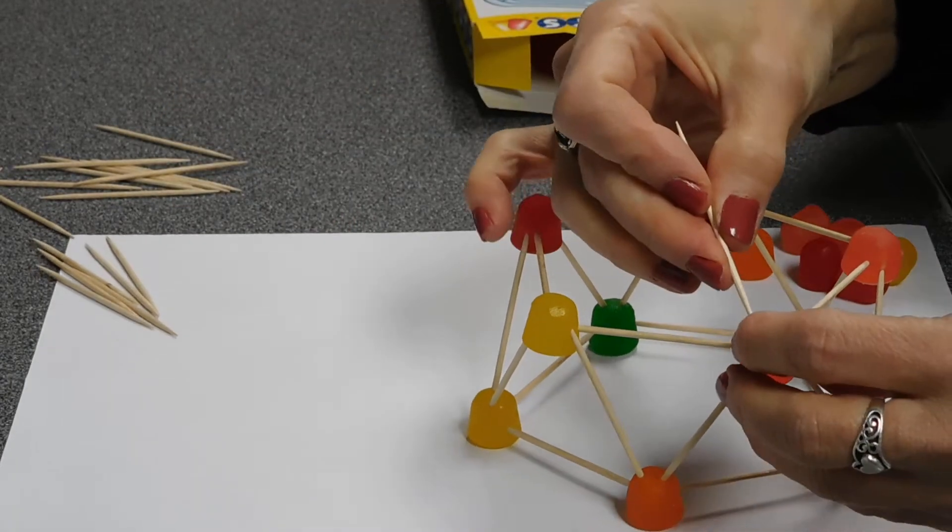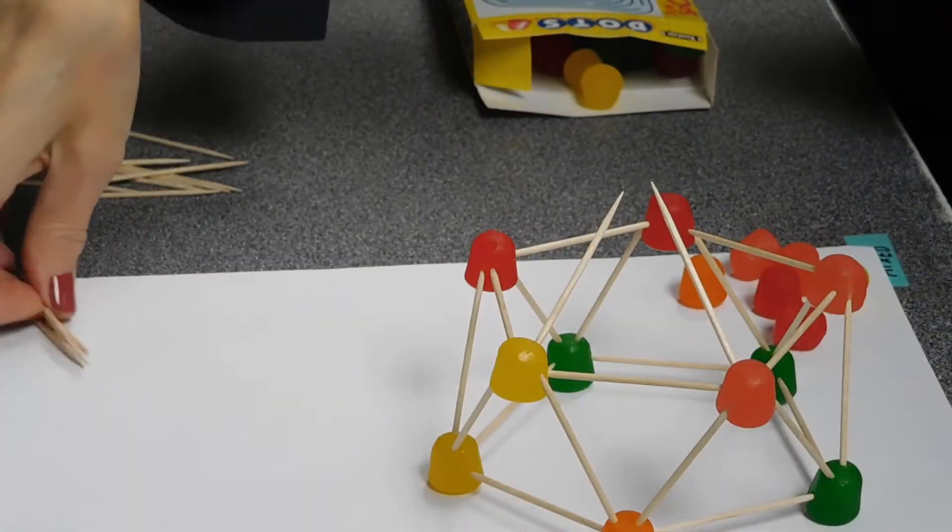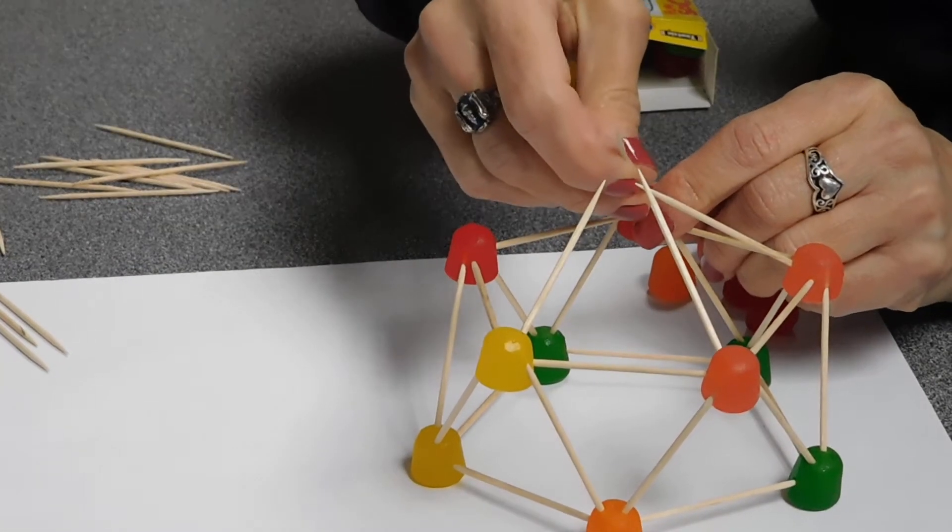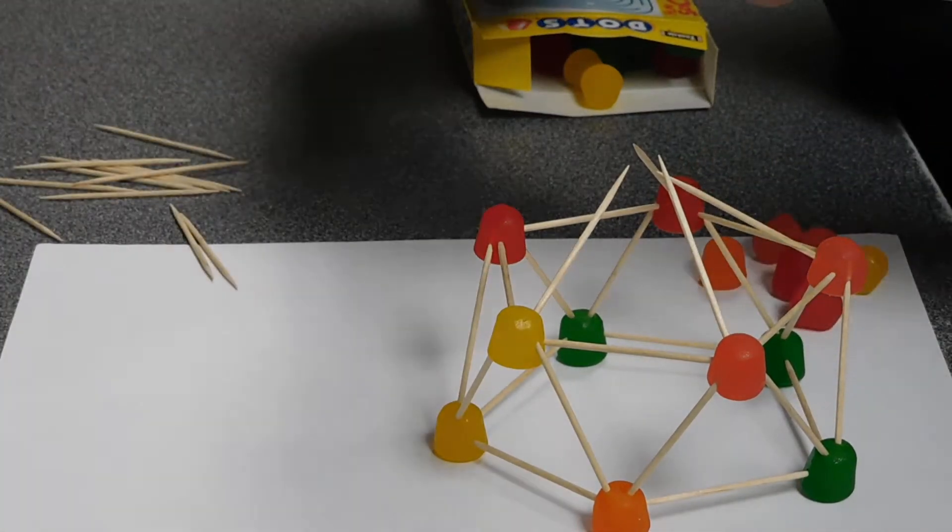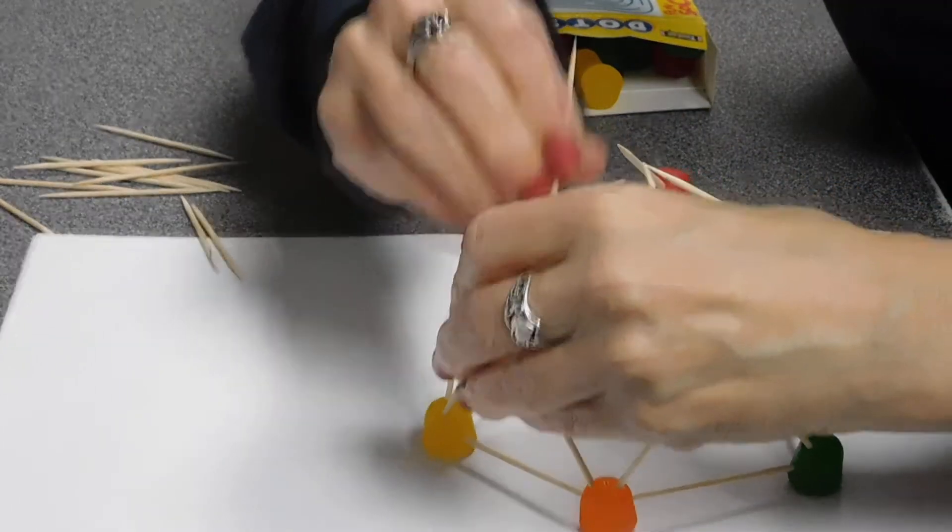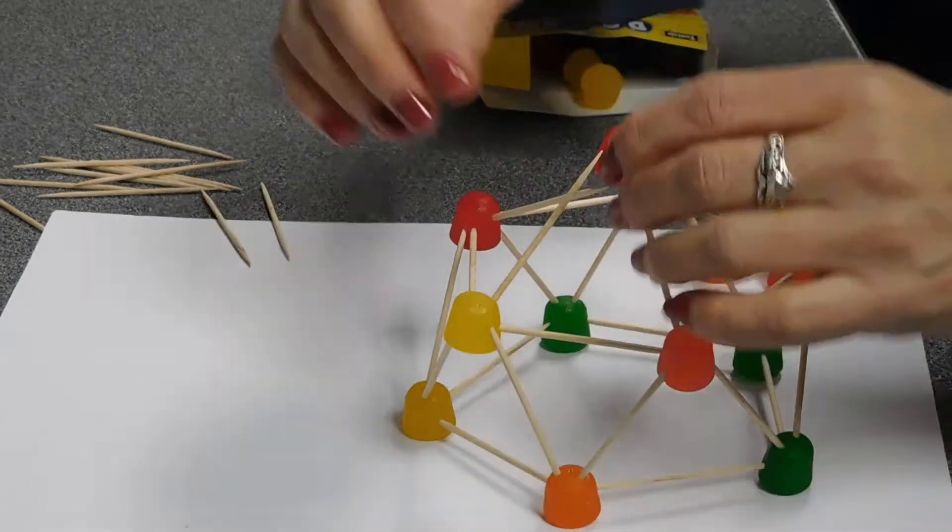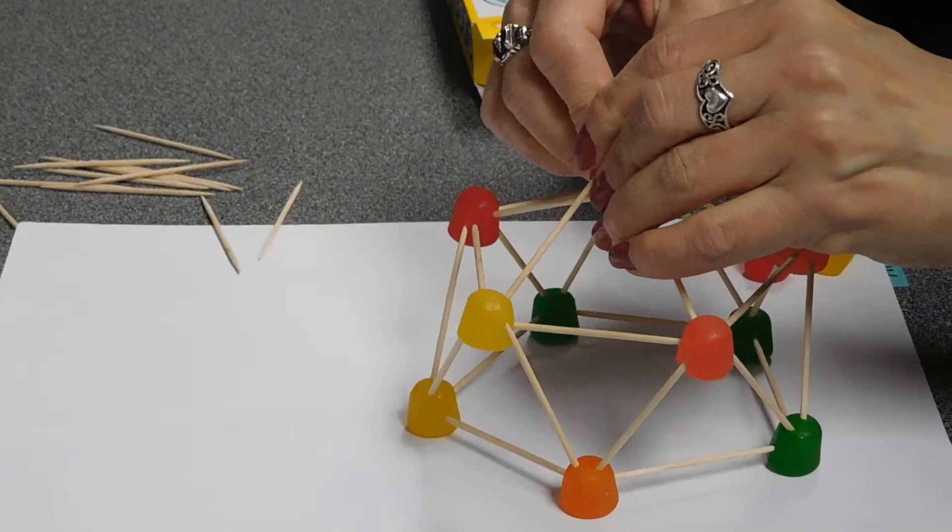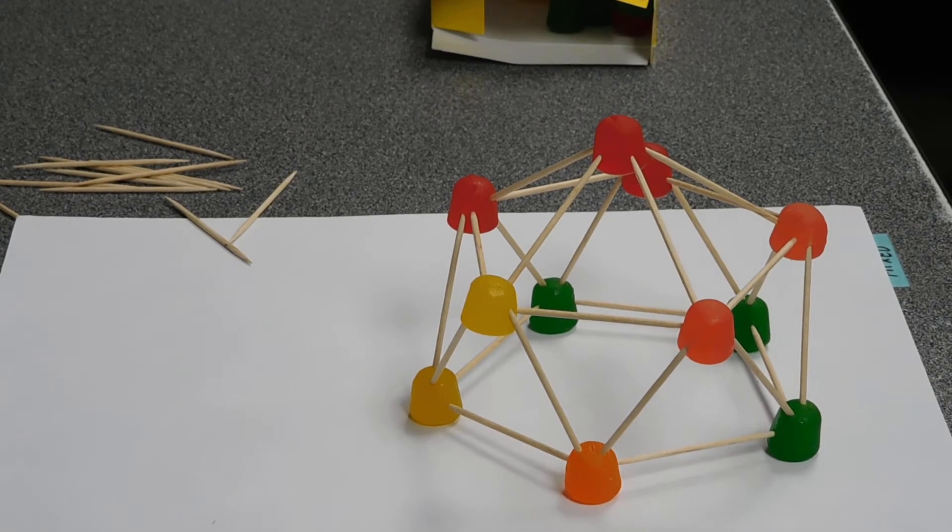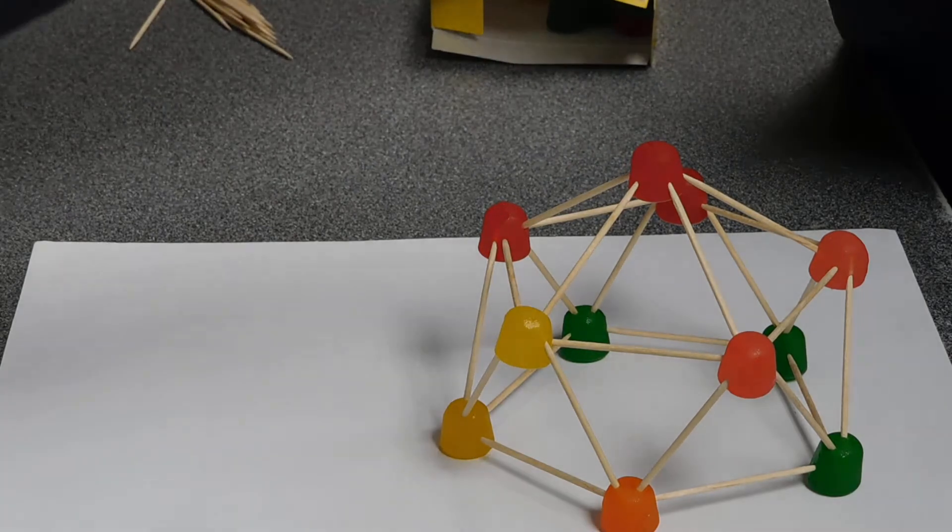And what we're going to do now is take five more toothpicks and direct them upwards and toward the center. That one, I'm not too happy with where it is. So I'm going to connect them all in the center with one more gumdrop. So now I'm going to clear up those gumdrops, clear up those toothpicks, and let's take a look at what we have.